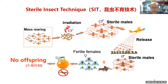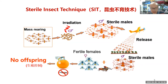Some technologies include the SIT — Sterile Insect Technique. This technology is used to control some insects, especially in agriculture. This method uses irradiation to sterilize the male insects and then release them so that they mate with wild female insects, producing no offspring.